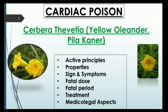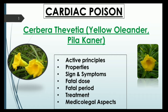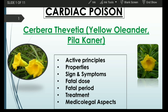Hello everyone, we will discuss cardiac poison — specifically Cerbera thevetia, that is yellow oleander, commonly called Pila Kaneer in Hindi. We have already discussed digitalis purpurea and Nerium oleander in previous lectures, so check out the playlist dedicated to cardiac poisons. Yellow oleander somewhat looks like this; you may have seen it in temples as it is used for worship. It is a mythological belief that this flower is loved by Lord Shiva.